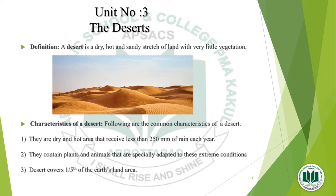First of all, we will come to know what a desert is. A desert is a dry, hot and sandy stretch of land with very little vegetation.